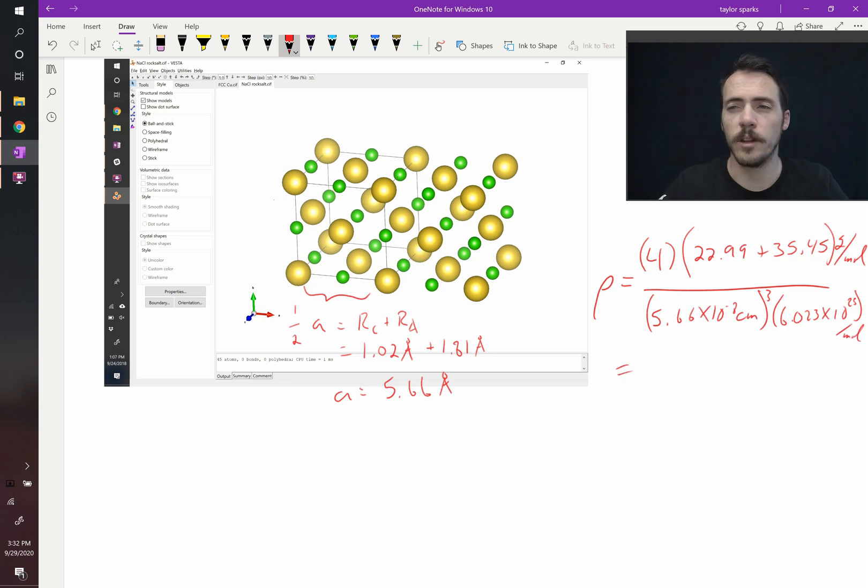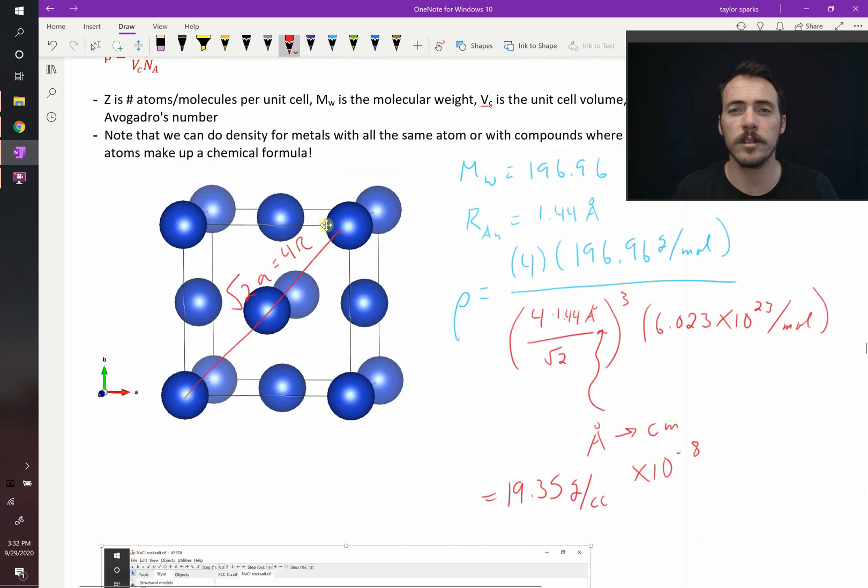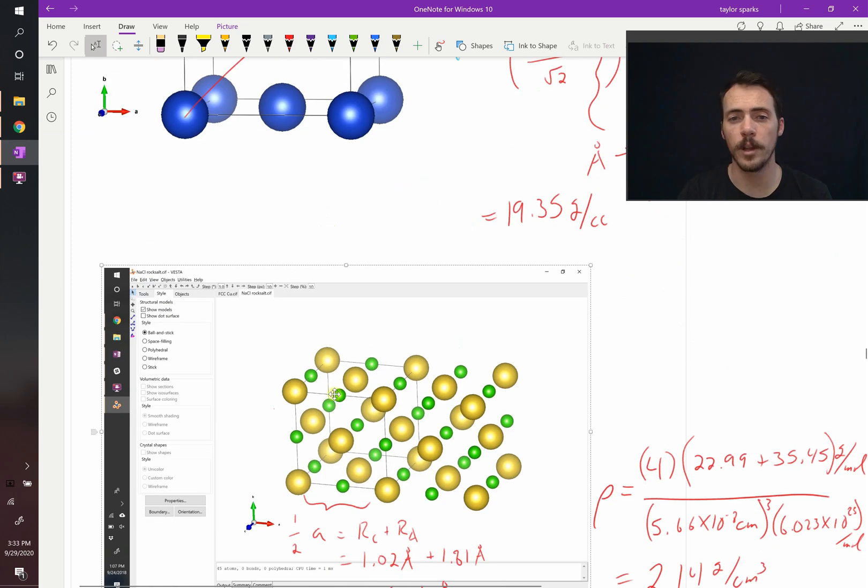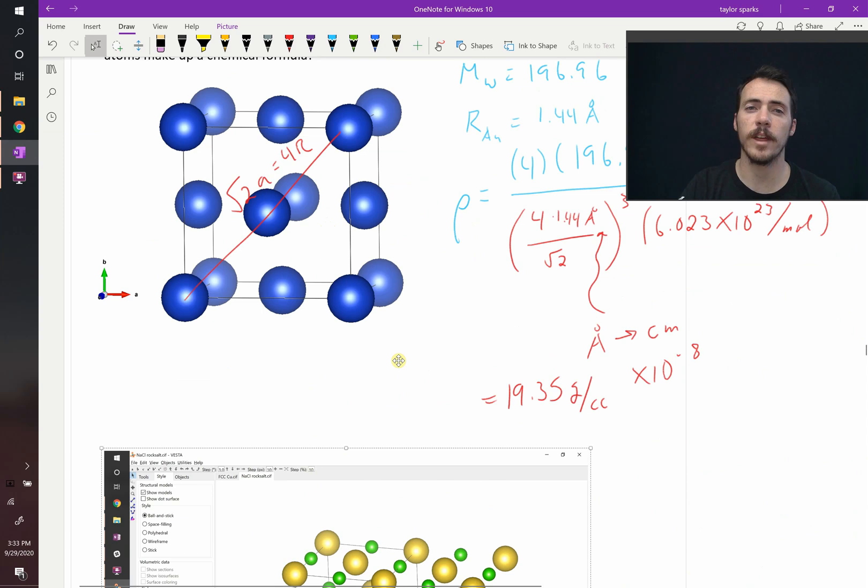Let's plug these into a calculator and see how close we get. I come to a density of 2.14, which is pretty dang close to the value of 2.16 that I find in literature. So that's how you go about doing theoretical density calculations, either for a metal where it's just one element, or for a formula that exists inside a unit cell. It works either way. That's theoretical density.